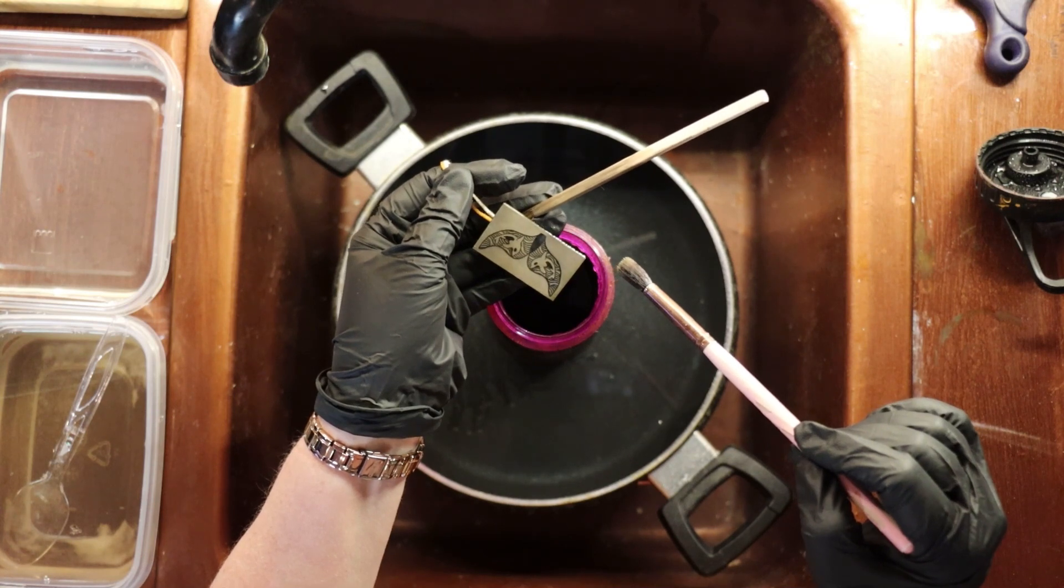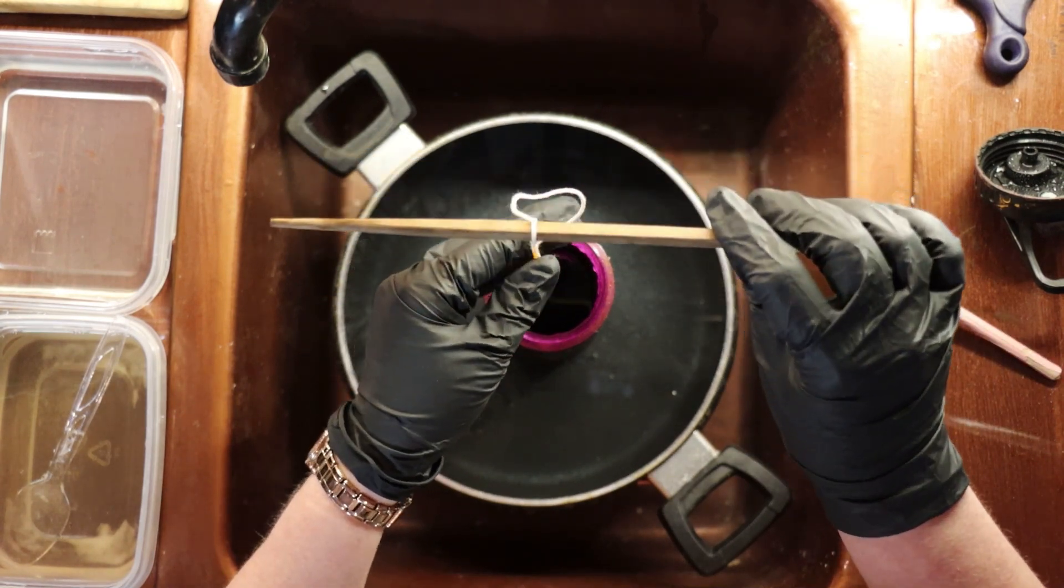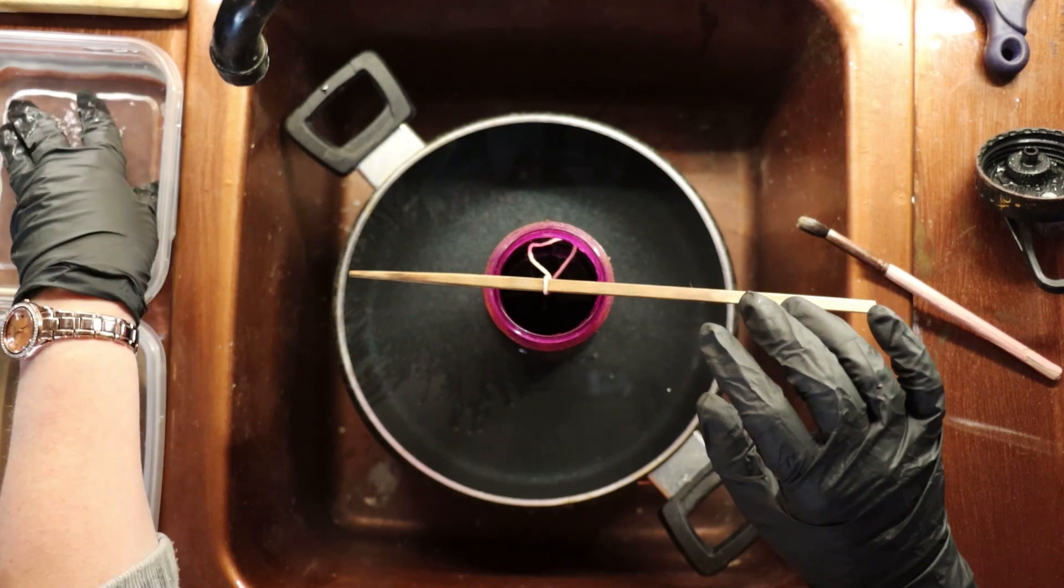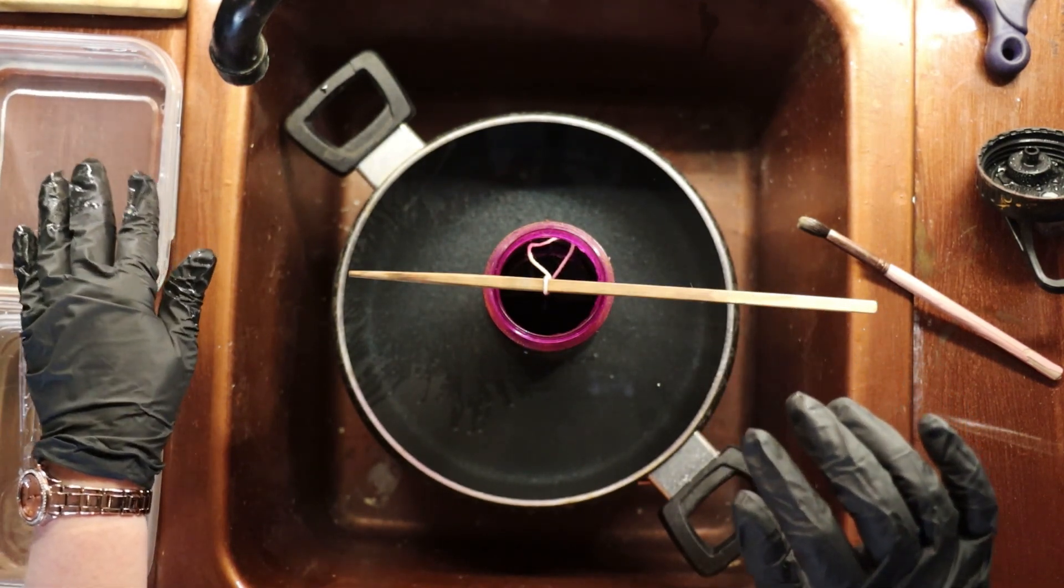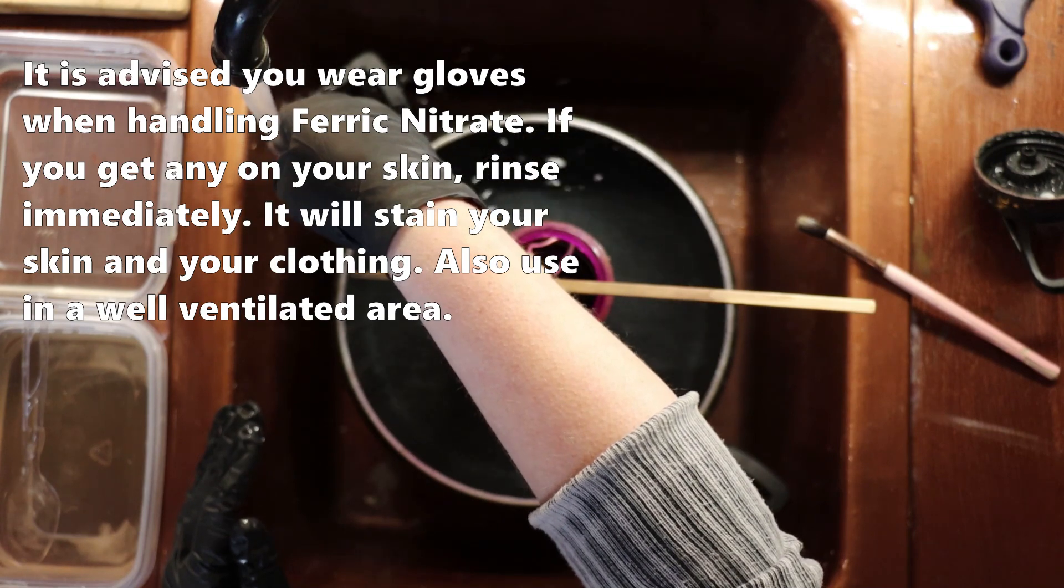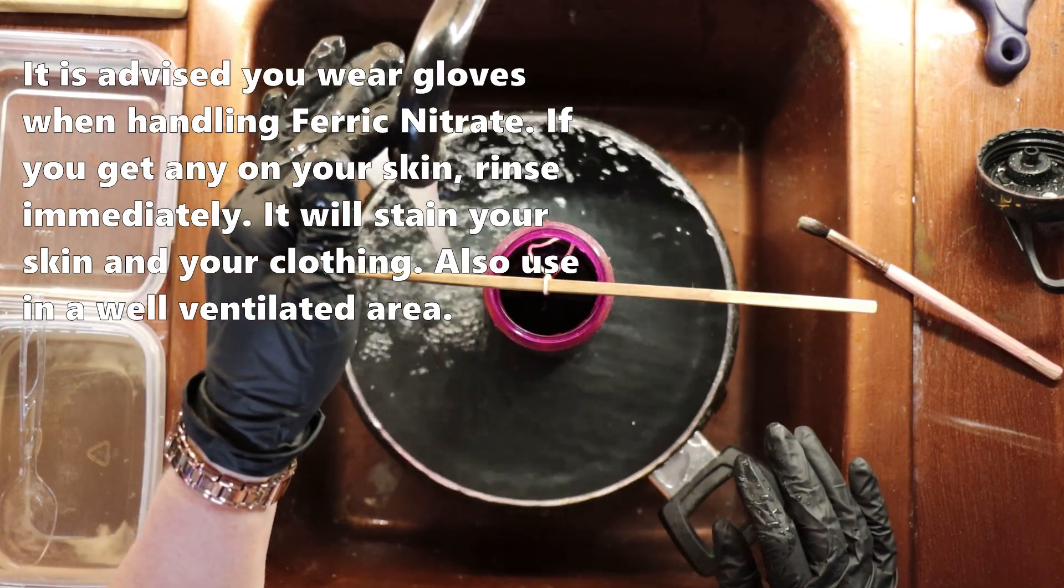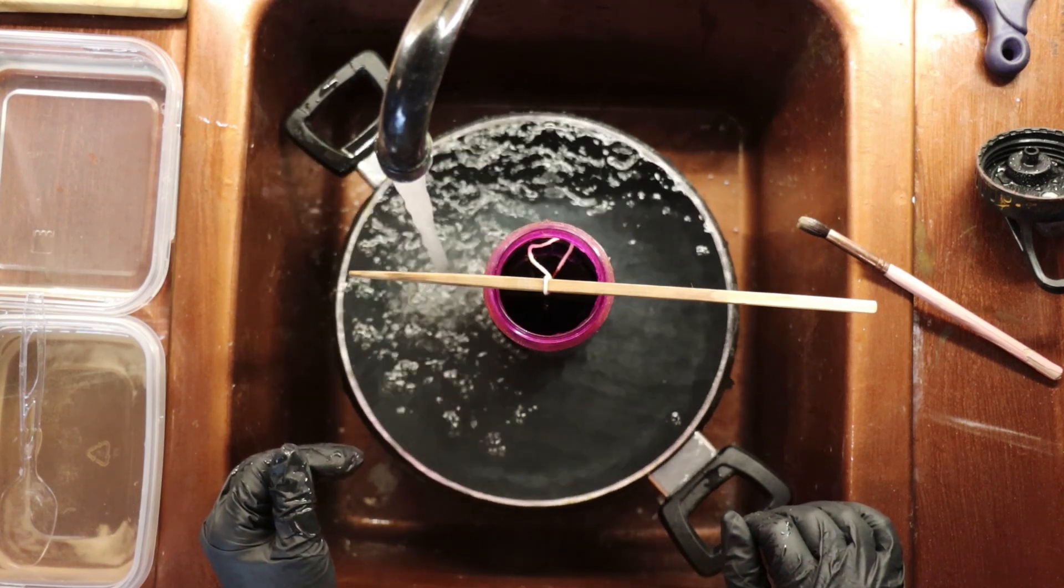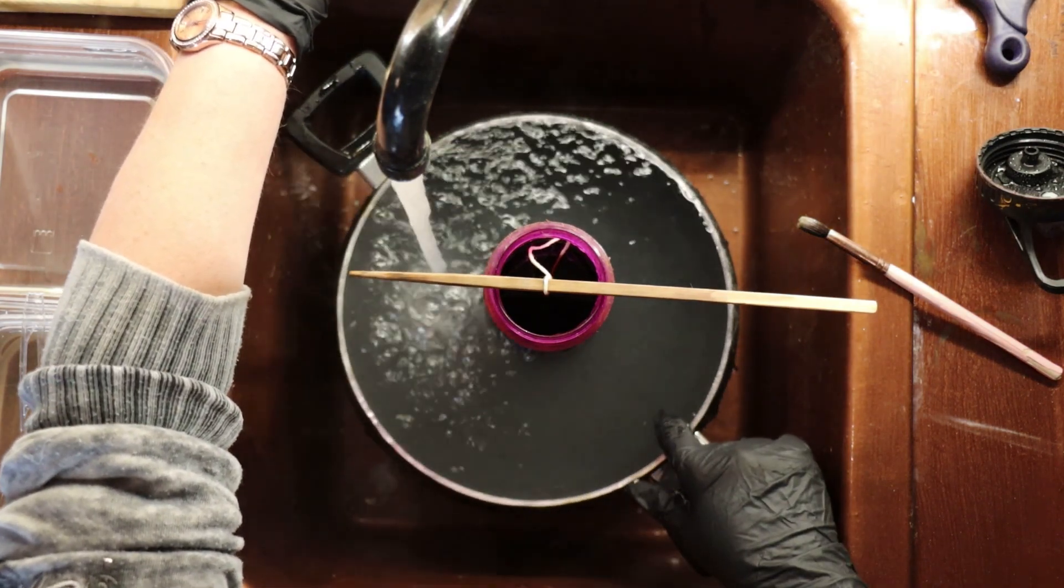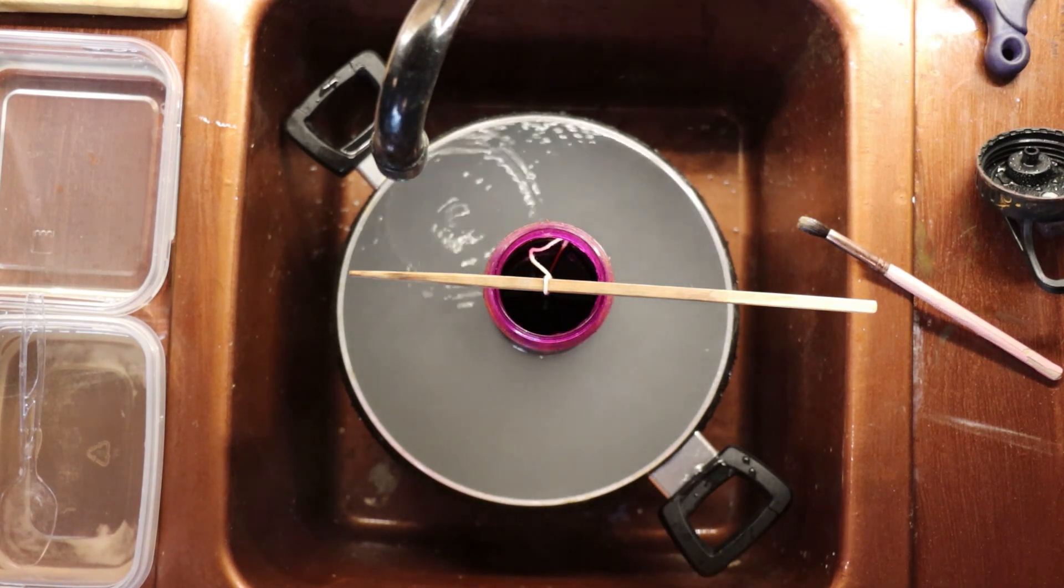We see there's not much progress on the piece at this point. The next time we check it, we will definitely see some progress. So we want to suspend the piece back into the solution, rinse my fingers off, and at this point I'm going to heat the water back up again. We heat the water because the etchant works much faster if it's a heated solution. Now we can set our timer for 20 more minutes and we'll check back on the progress.